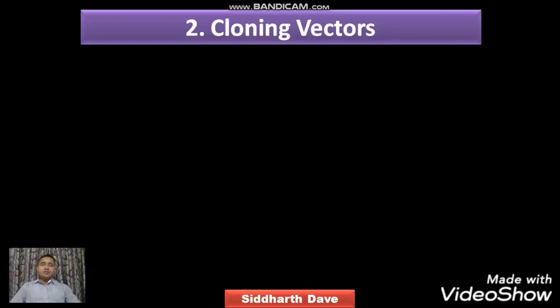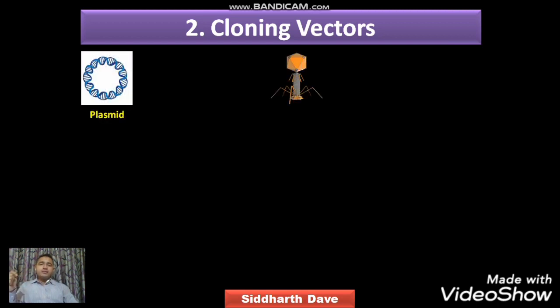Now, first of all, what is a cloning vector? Cloning vectors are the molecules which will carry your gene of interest into another organism. Generally there are two cloning vectors used in recombinant DNA technology: plasmid and bacteriophage.